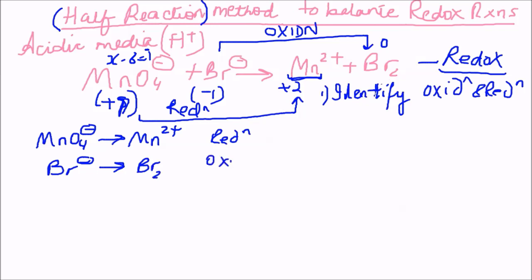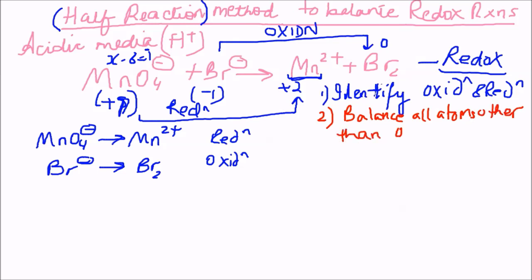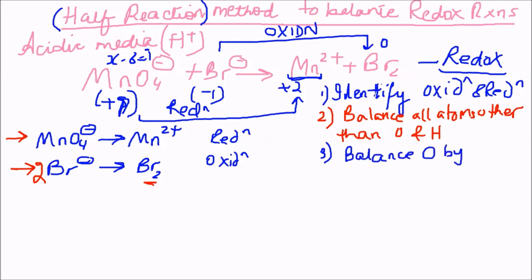The second step is to balance all atoms other than oxygen and hydrogen. In the reduction half, I have one manganese on each side — balanced. In the oxidation half, I have two bromines on the right and only one on the left, so I multiply the left side by two: 2Br⁻ → Br2.